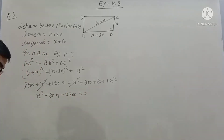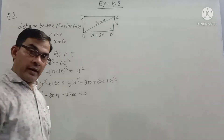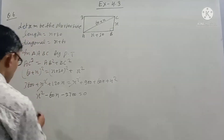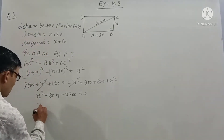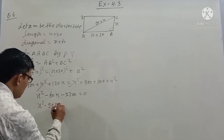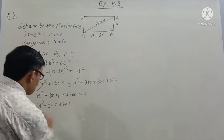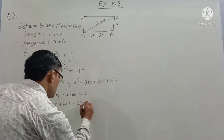Now we factor. The factors are: x squared minus 90x plus 30x minus 2700 equals zero.